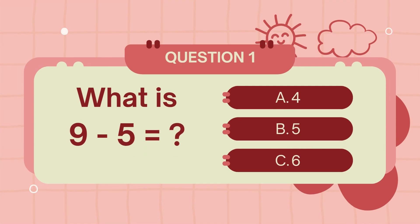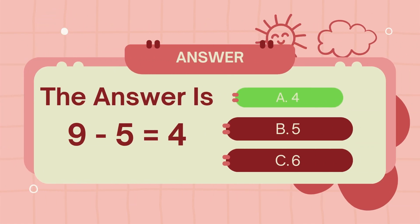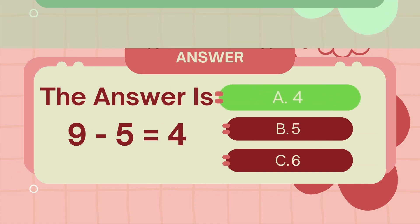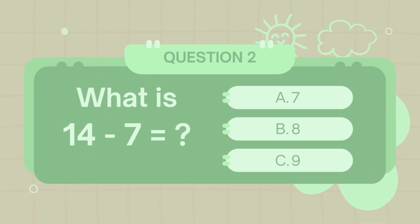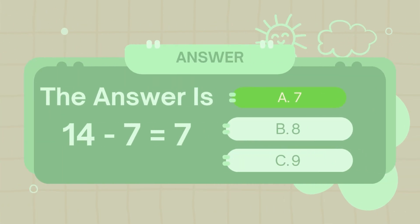What is 9 minus 5? The answer is 4. What is 14 minus 7? The answer is 7.